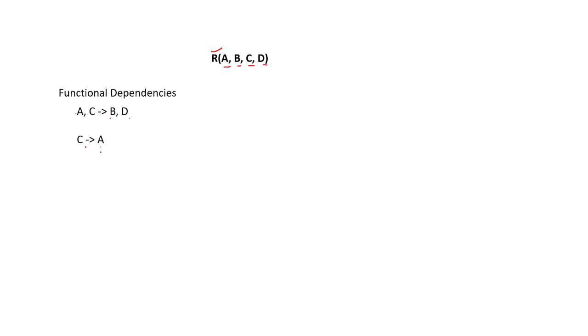Let us consider a relation R which has attributes A, B, C, and D. There are two functional dependencies that hold on R: AC gives you B and D, and C gives you A. The first step will be to compute the closure of each functional dependency, so we have to compute two closures — one on AC and next on C.